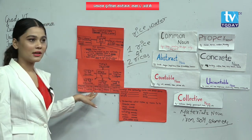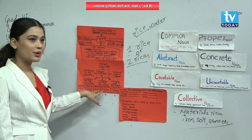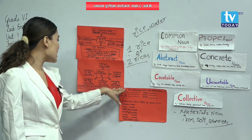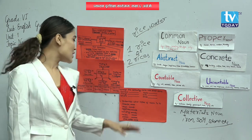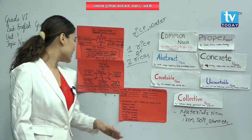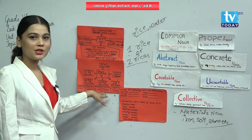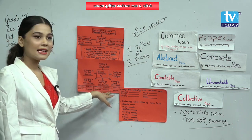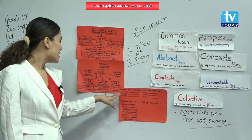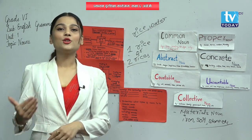You can look at more examples here: singular — bus, brush, class, bench. These are all singular nouns. If we add 'es': bus + es = buses, brush + es = brushes, class + es = classes, bench + es = benches. These are examples of singular nouns changed into plural nouns.